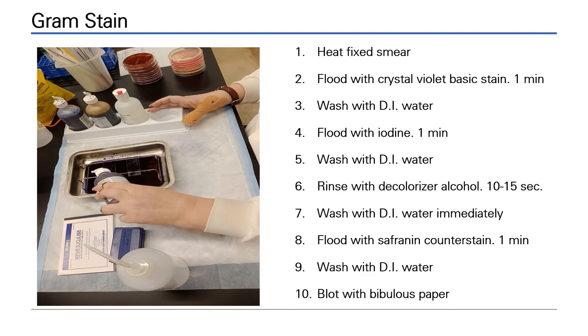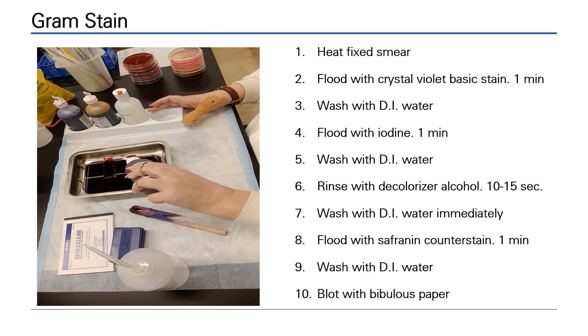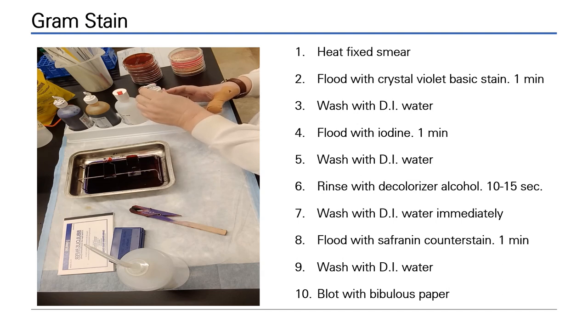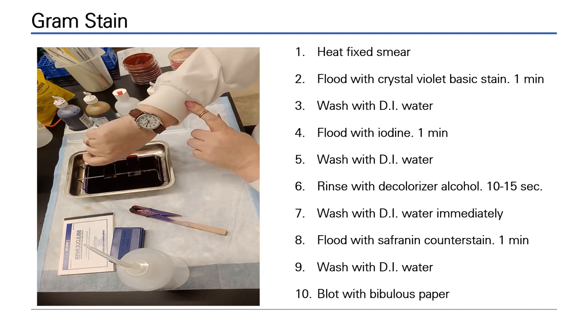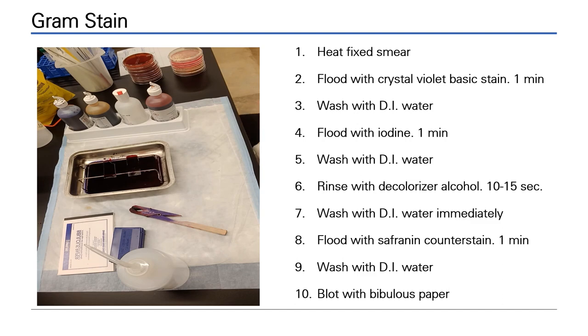Lastly, you come in and flood with safranin. This is a counterstain. All this does is enter both cell types across the cell wall into the cytoplasm. It will stain them all pink. However, only the gram negatives became completely decolorized during the alcohol step and therefore they will appear pink. The gram positives retained some crystal violet due to the thickness of their cell wall and they will still look purple. This is the differential nature of the gram stain.